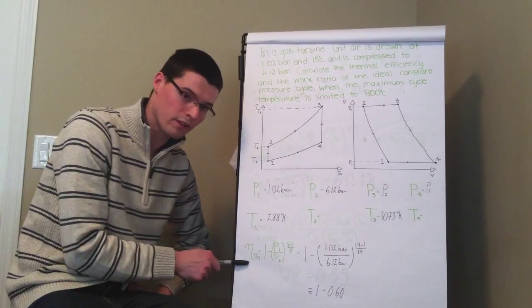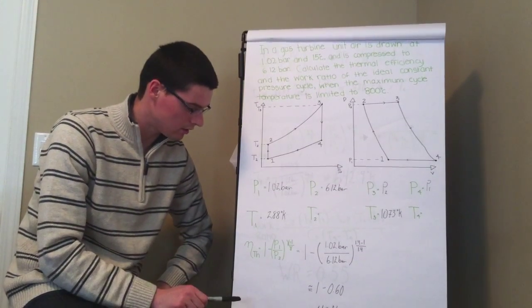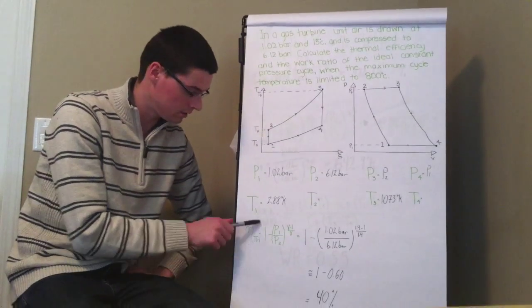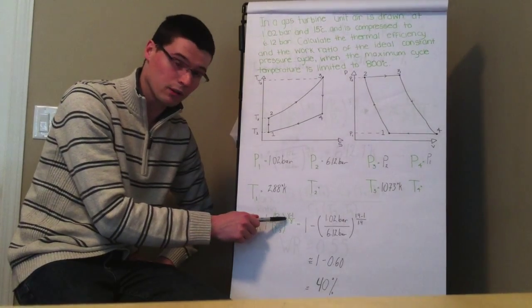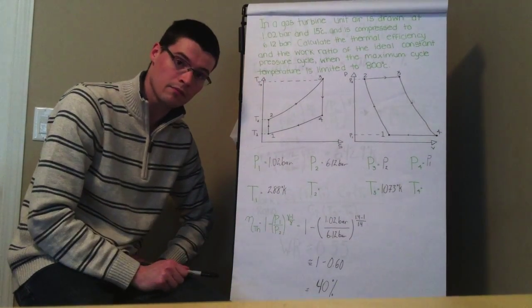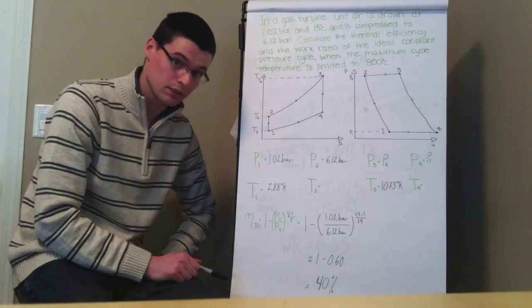So we want to find the thermal efficiency. We have the pressures. So that's pretty easy actually, we can see here one minus pressure one over pressure two to the power of gamma minus one over gamma. Now gamma for air being 1.4, which is pretty standard.